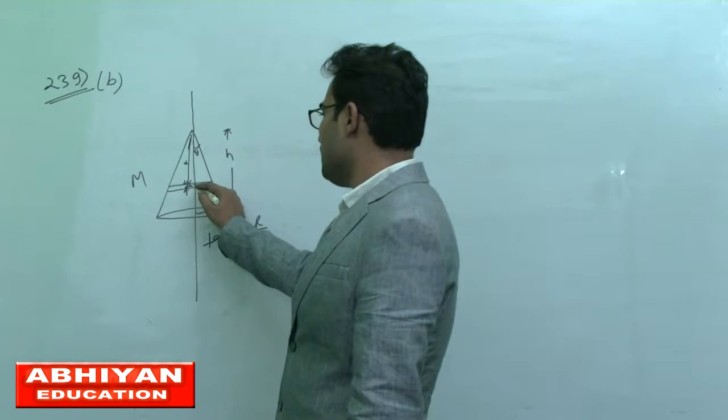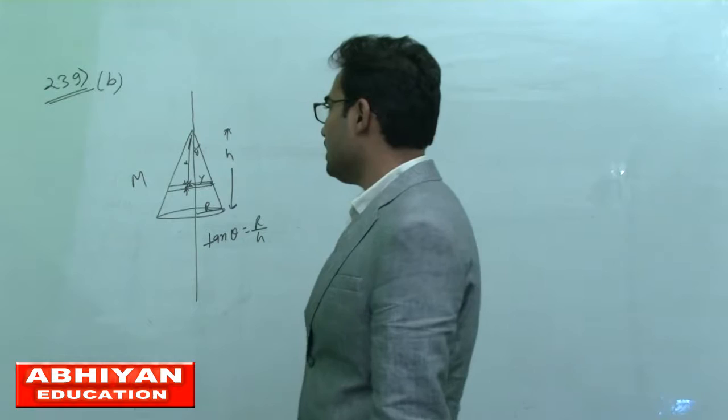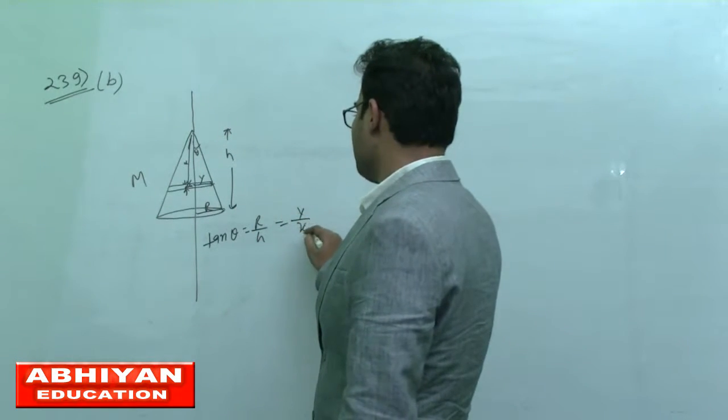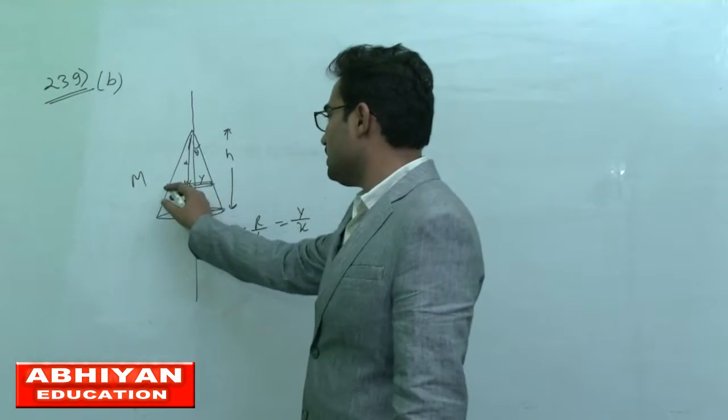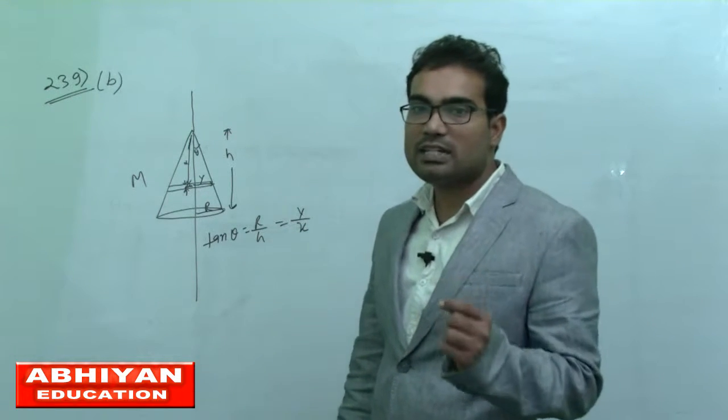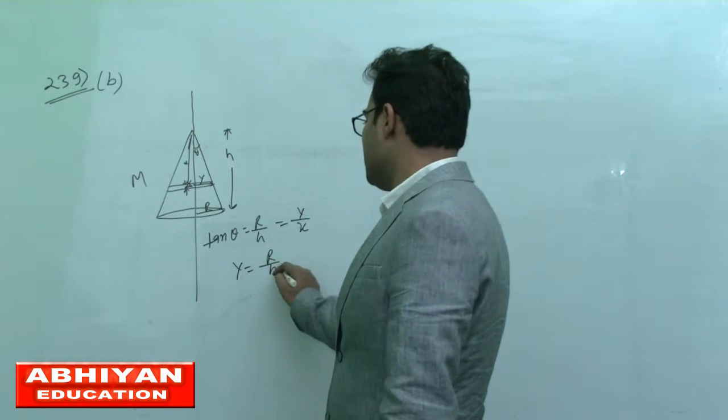The radius is capital R, so tan theta equals capital R by H. At distance x, the disc we're considering has radius y, so tan theta equals y by x. From this, we can find the radius of this element, which is R by H times x.